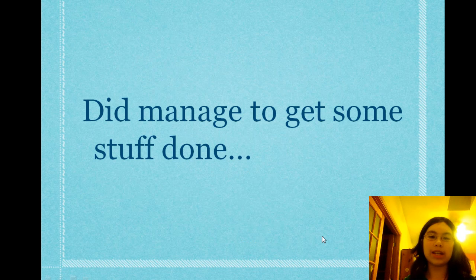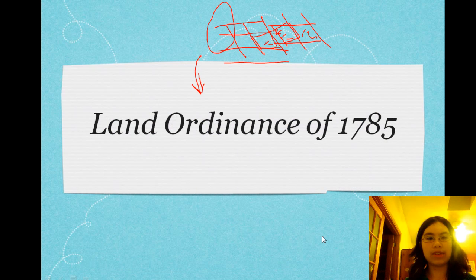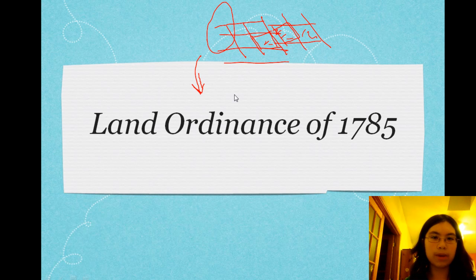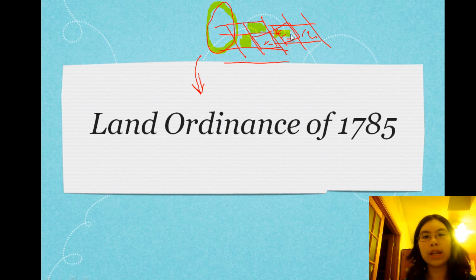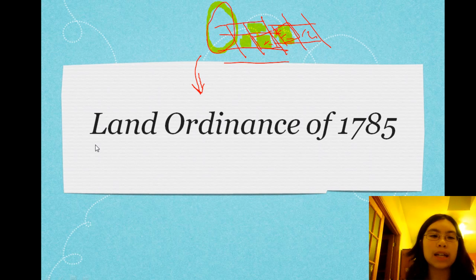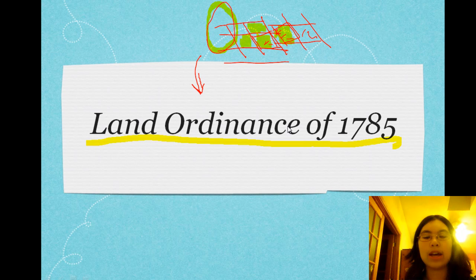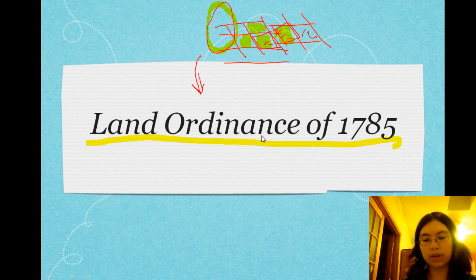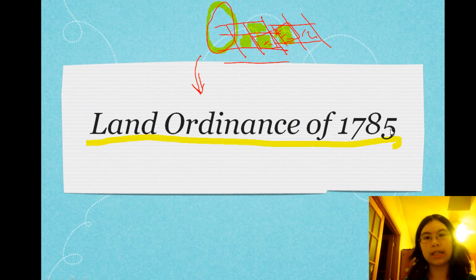However, the Articles of Confederation did manage to get some stuff done. You may have heard of the Land Ordinance of 1785. If you've ever been on an airplane, you may have noticed the land is weirdly arranged in little grids — part of that has to do with the Land Ordinance of 1785, which set out rules and ideas for surveying and selling state land. These townships would be surveyed into the squares you see when you look out of your airplane window.